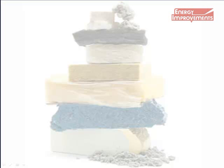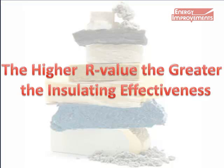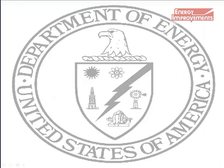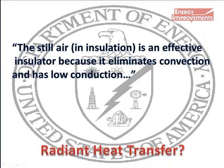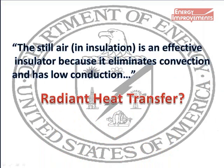Traditional insulation is an important part of battling heat transfer. The higher the R-value, the greater the insulating effectiveness. According to the Department of Energy, the air in the insulation is an effective insulator because it eliminates convection and has a low conduction. Did you notice there is no mention of traditional insulation stopping radiant heat transfer?